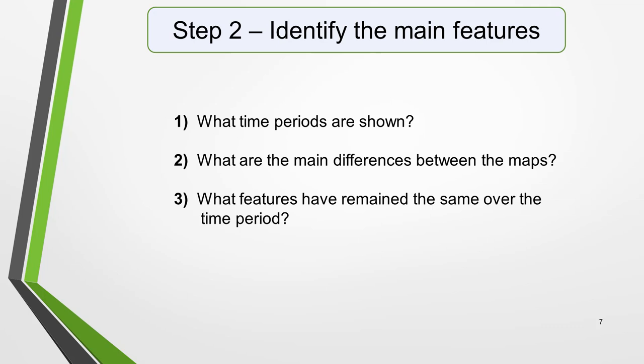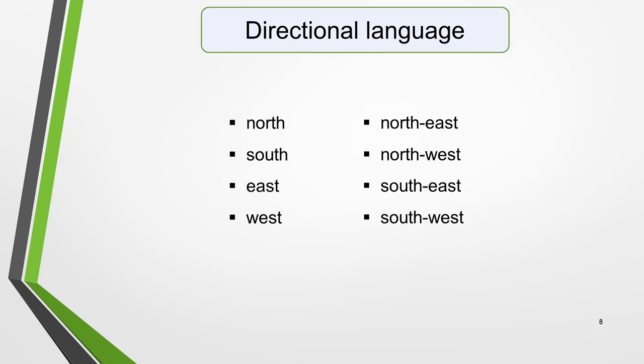The two maps in our practice question show the village of Stokeford at two different times in the past, which immediately tells us that we will need to use the past tense in our essay. What are the main differences between the maps? What features have disappeared, and what new features are in their place? What features have remained the same over the time period? Also think about directional language you could use, such as north, south, east and west, and northeast, northwest, southeast and southwest. The examiner will like to see words such as these used, and they'll gain you marks.